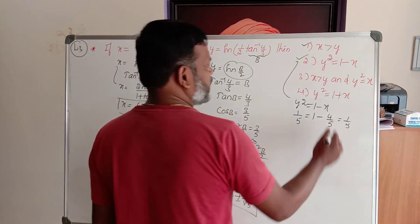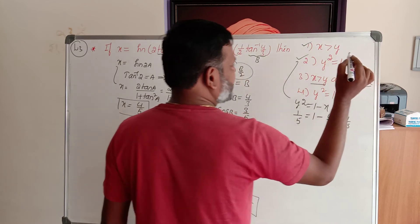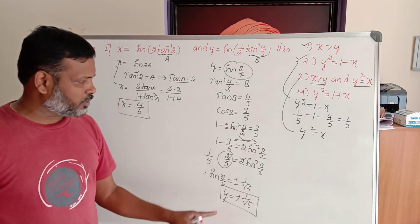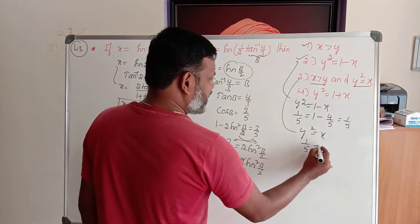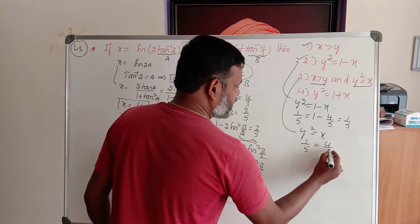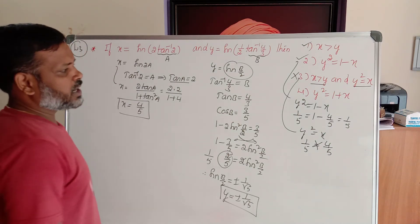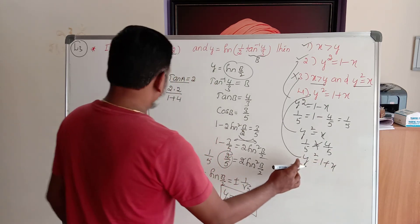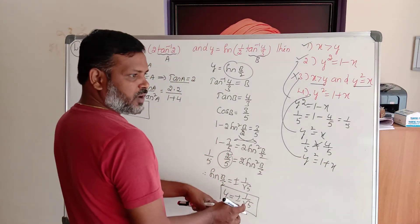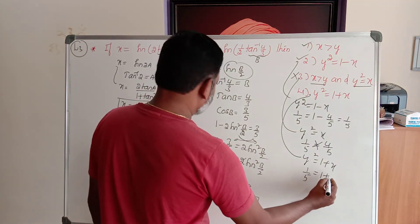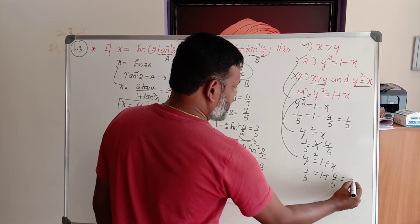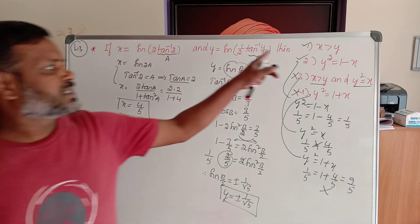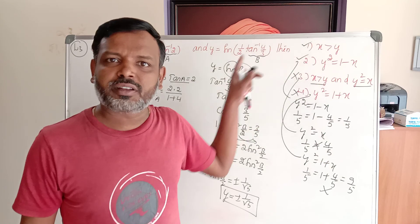Looking at the third option: x greater than y and y square equals x. y square is 1 by 5, but x is 4 by 5 — this is not possible, so the third option is eliminated. The fourth option: y square equals 1 plus x. That gives 1 by 5 equals 1 plus 4 by 5, which equals 9 by 5 — this is not possible either. Therefore, the correct answers are: x is greater than y, and y square equals 1 minus x.